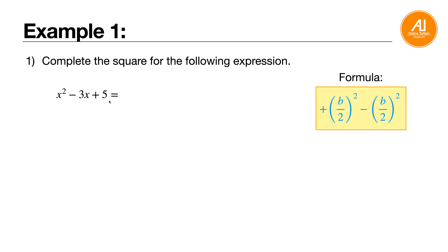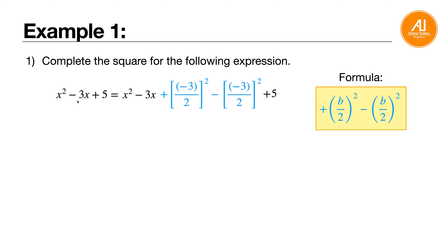When you want to complete the square, you need to include this formula into the equation. We know that b is minus 3. So you write x squared minus 3x — copy exactly the first two terms — then include the formula between the second term and third term, between minus 3x and plus 5. So it becomes: minus 3 over 2, bracket squared, minus minus 3 over 2, bracket squared.